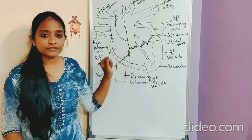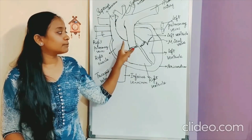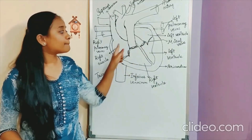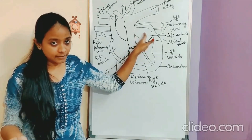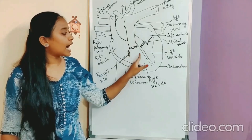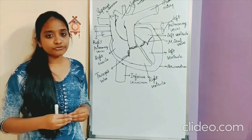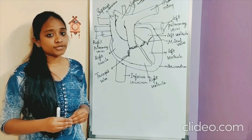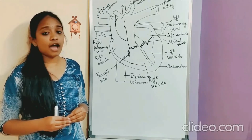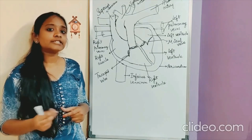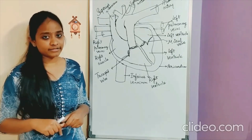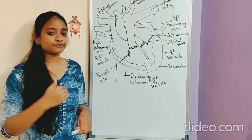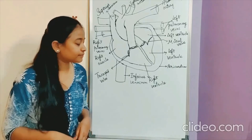If you look at the internal structure of the heart, the heart is made up of four chambers. Why four chambers? What is the role of the four chambers? To understand that, let us discuss the mechanism of the path of blood flow in the body.